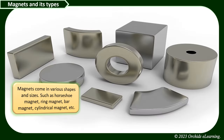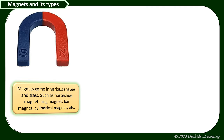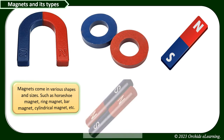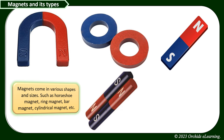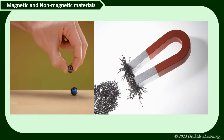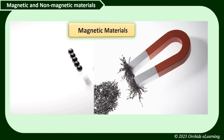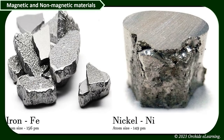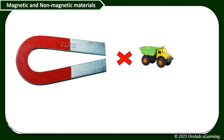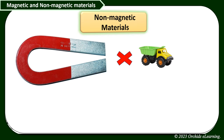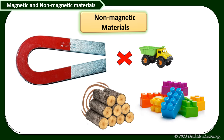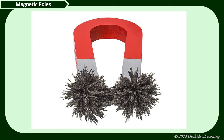Magnets come in various shapes and sizes, such as horseshoe magnet, ring magnet, bar magnet, cylindrical magnet, etc. Materials that are attracted by a magnet are called magnetic materials — for example, iron and nickel. Materials that are not attracted by a magnet are called non-magnetic materials — for example, wood and plastic.